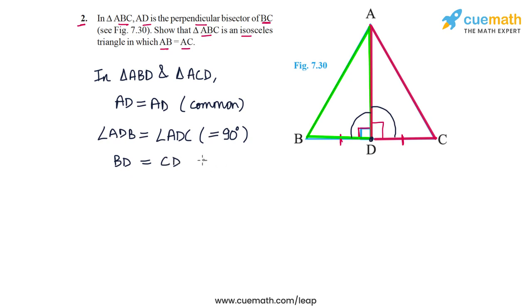This is because AD bisects BC. So now what we see is that in these two triangles ABD and ACD, we have two side pairs which are equal and the included angle pair also as equal. This means that triangle ABD is congruent to triangle ACD using the SAS congruence criterion. So the two triangles are congruent, and this means that all the other corresponding parts are also equal.